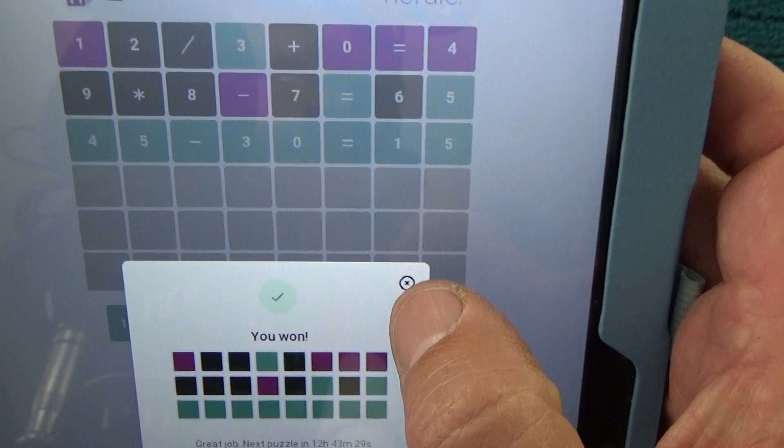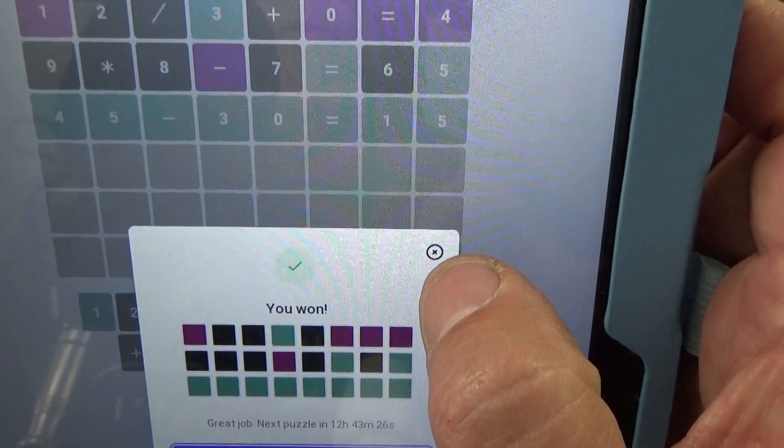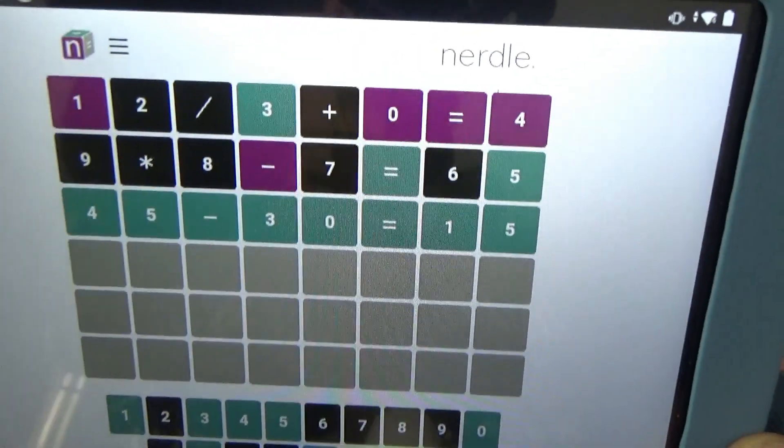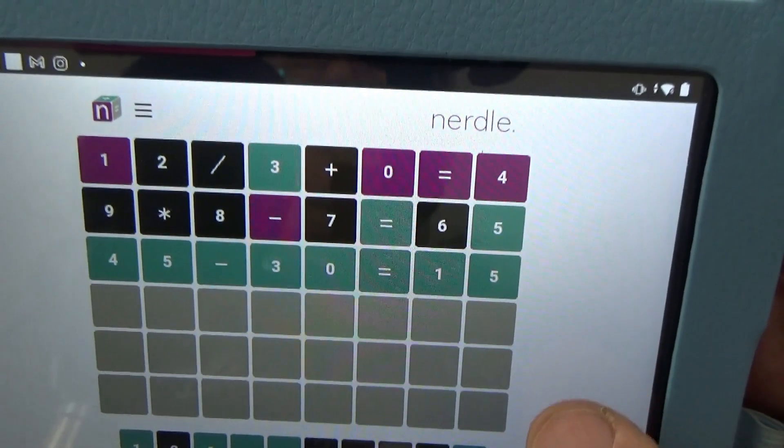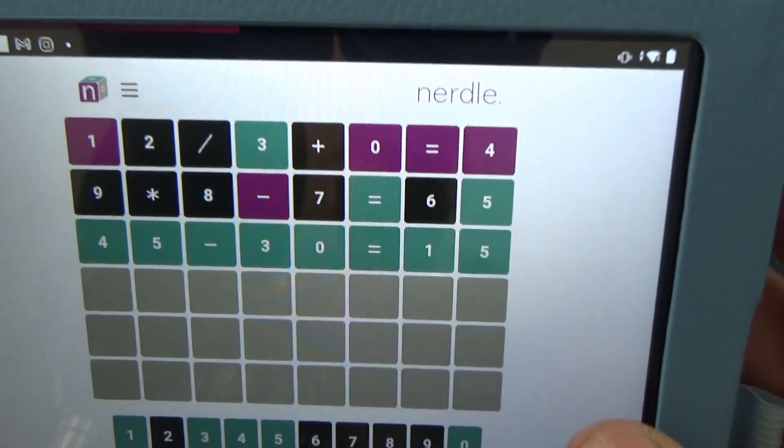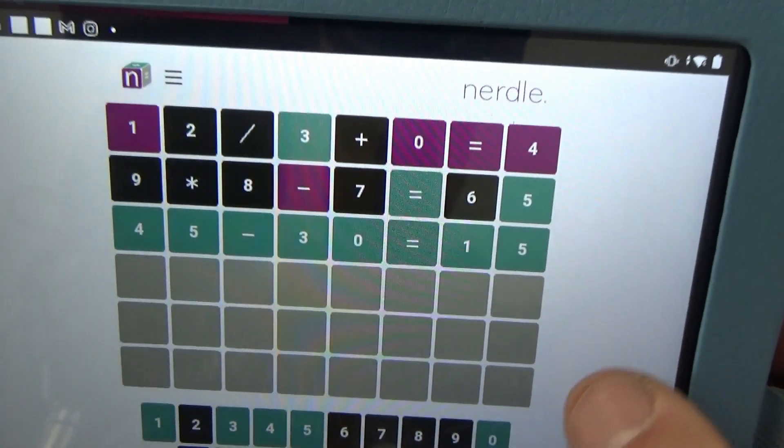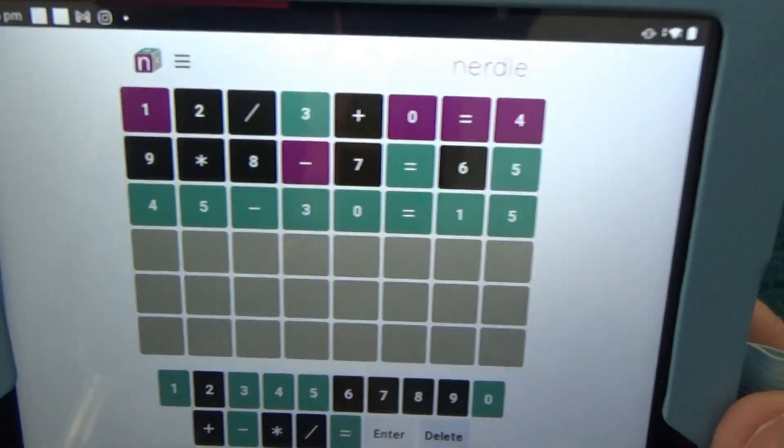and enter, and oh, there we go. It's all blue-green, and it says you've won. So there we go, I've solved Nerdle in three guesses. So, okay, so there we go. It's actually quite, I've quite enjoyed Nerdle.